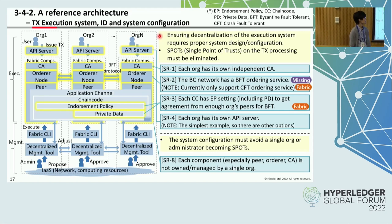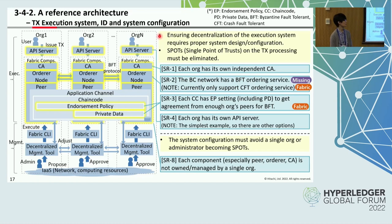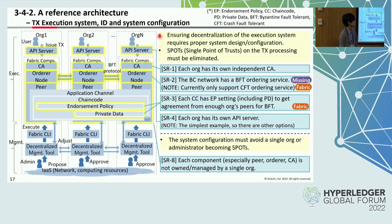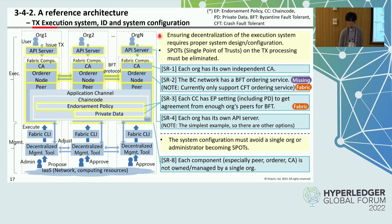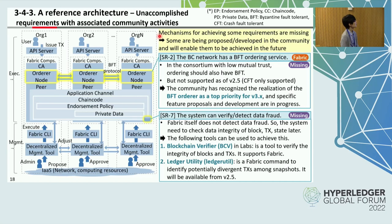Each organization should have its own API server to submit transactions to the fabric network by themselves. For system configuration, it must avoid a single organization or administrator becoming a single point of trust. To do this, each component, especially peers and the CA, should not be owned or managed by a single organization.